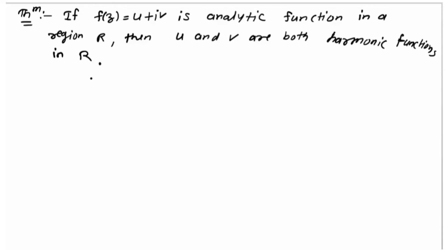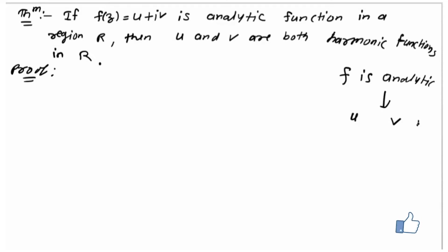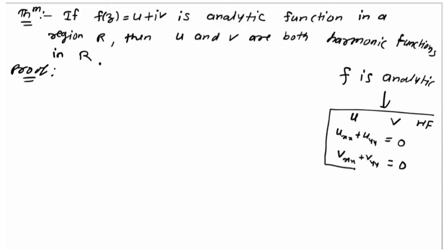The meaning of this statement is: if f(z) is analytic, then the u and v inside it become harmonic functions — meaning u_xx + u_yy = 0 and similarly v_xx + v_yy = 0. So if a function is written as analytic, then its u and v satisfy the harmonic condition; that means both functions u and v are harmonic.